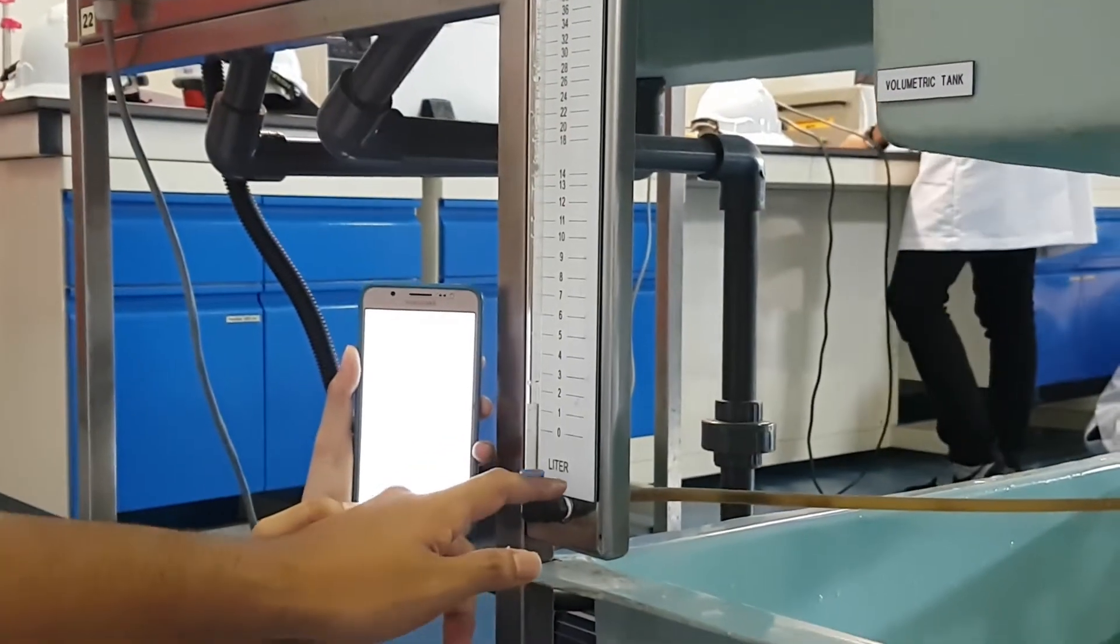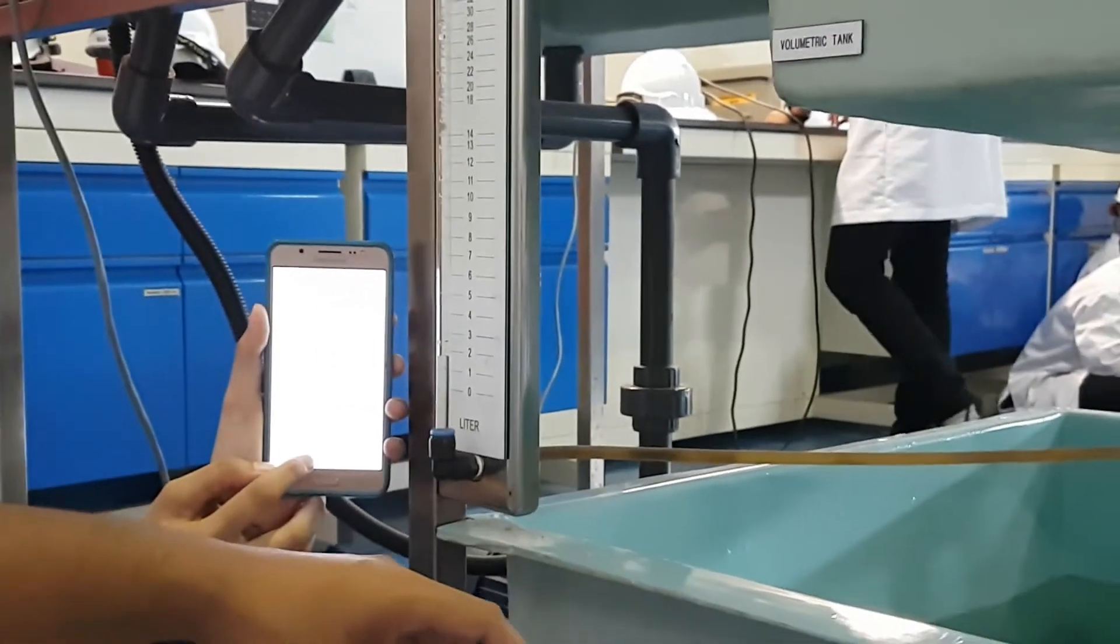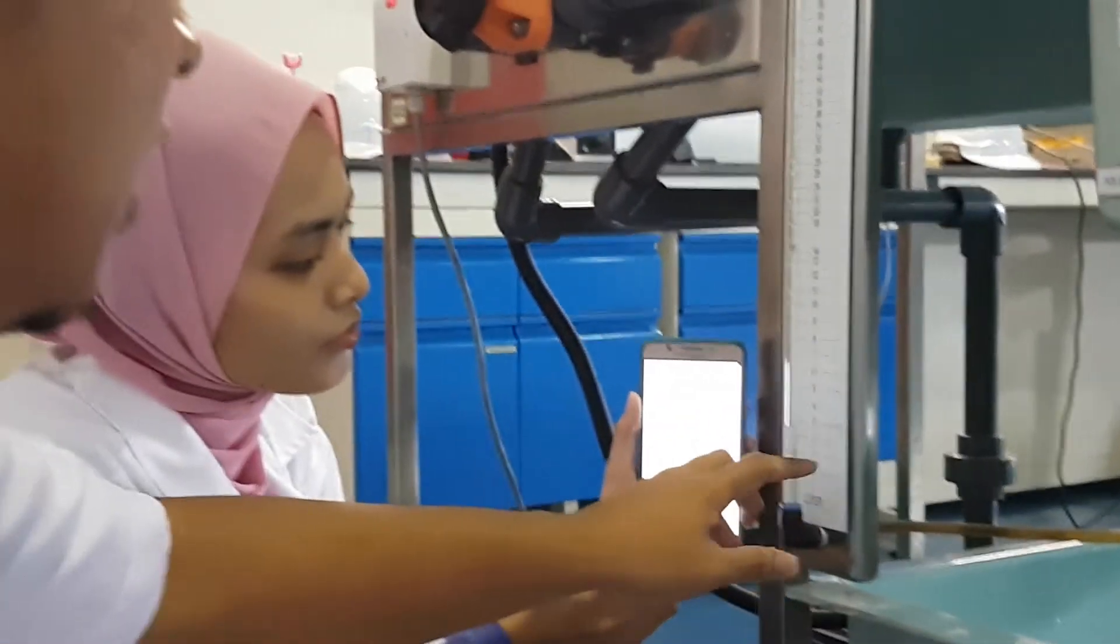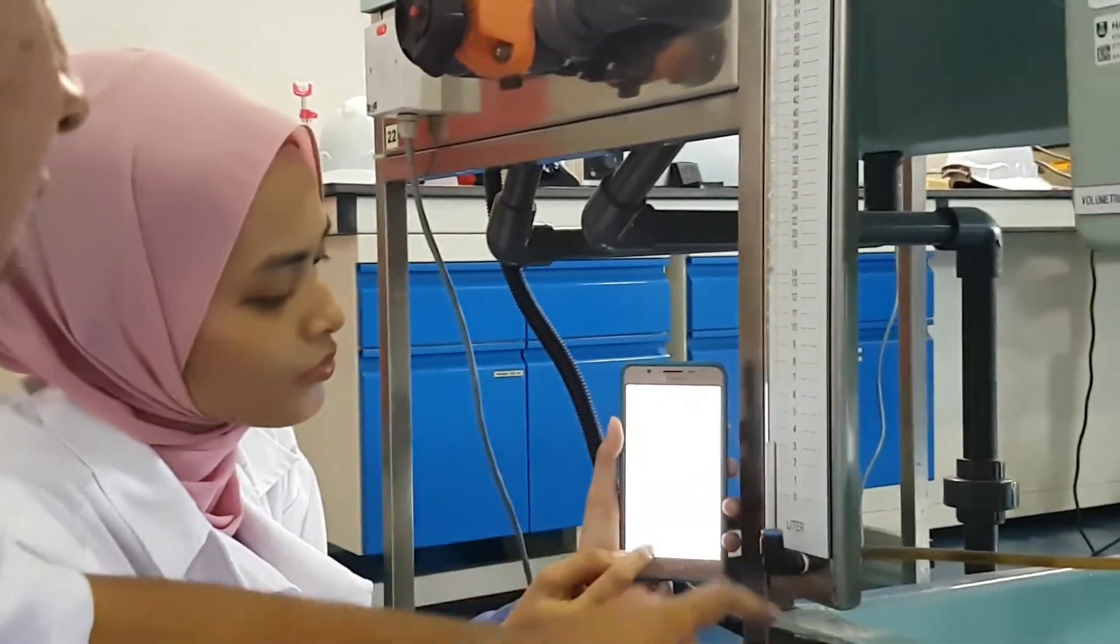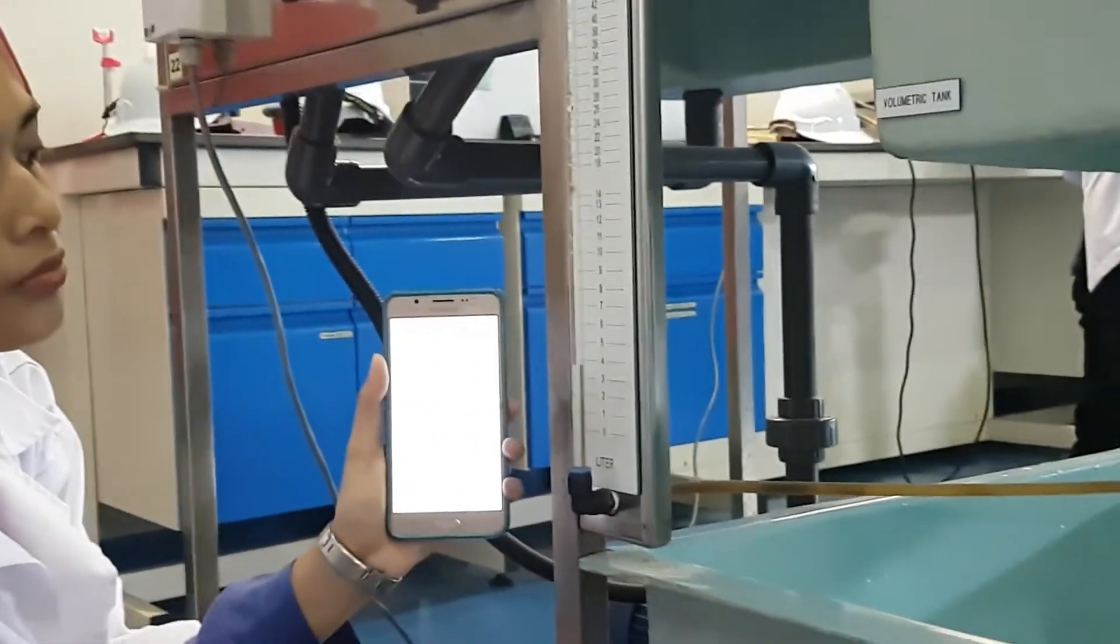Okay, we do all the experiment for the constant 3 liter. Okay, once it reaches 3 liter, then we take the time and so we get the flow rate.